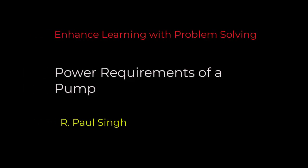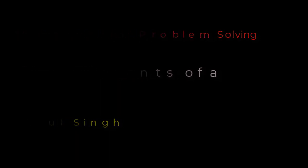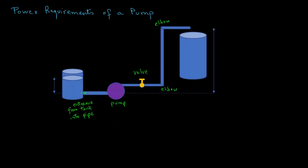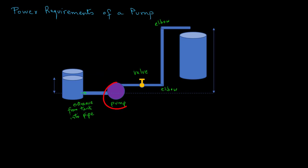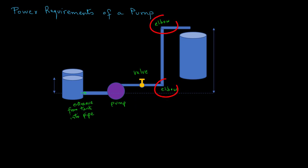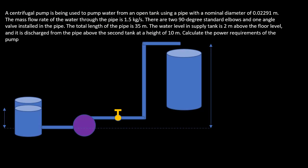In this tutorial we are going to look at a numerical problem on how to calculate the power requirements of a pump. For this we will look at a simple setup where we have a tank on the left hand side, a pump, and then a valve and a couple of elbows in the pipe to raise the water to the top of a second tank shown on the right hand side.